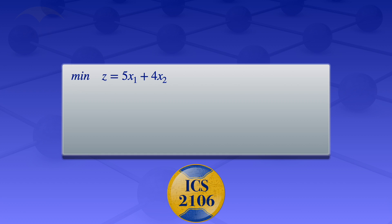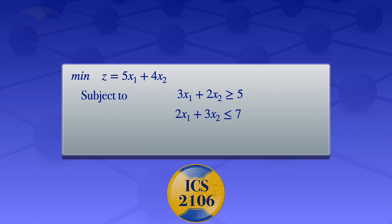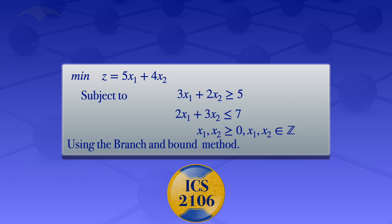In this video I'm going to minimize z which equals 5x1 plus 4x2, subject to the constraints: 3x1 plus 2x2 greater than or equals to 5, 2x1 plus 3x2 less than or equals to 7, x1 and x2 greater than or equals to 0, and x1 and x2 being integers. To solve this minimization problem I'm going to use the branch and bound method.